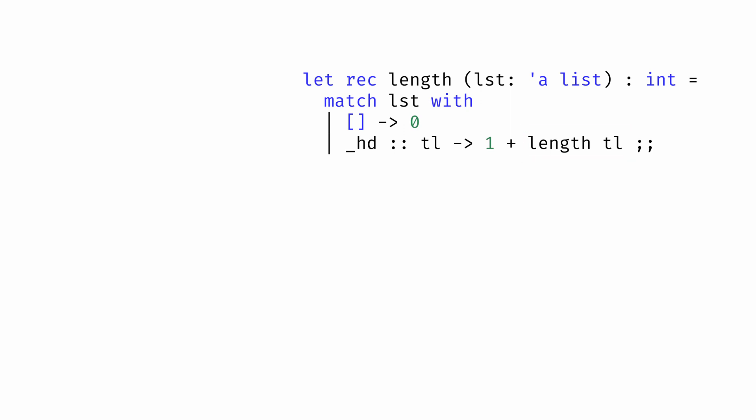So our original call to length is suspended while we wait for the recursive call to evaluate to a value, and then we add 1 to the result. That recursive call might also need to be suspended, as it calls the length function again, waits for it to evaluate to a value, and then add 1.